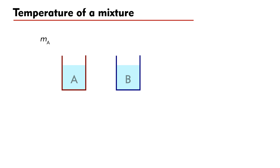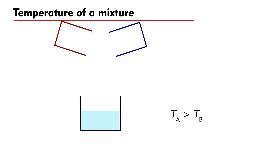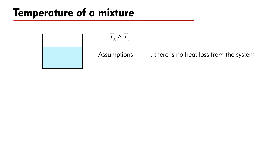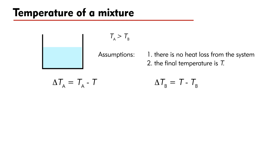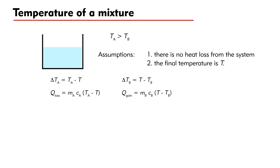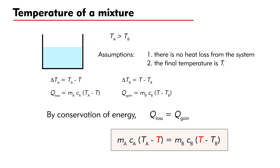Suppose we have two liquids A and B with masses MA and MB, specific heat capacities CA and CB, and initial temperatures TA and TB respectively. Assume that A is hotter than B, that is TA is greater than TB. Pour the two liquids into an empty polystyrene cup and assume there is no heat loss from the system. The final temperature is T. The magnitude of change in temperature of A is TA minus T, and that of B is T minus TB. The heat loss by A is Q_loss equal to MA times CA times (TA minus T). The heat gain by B is Q_gain equal to MB times CB times (T minus TB). By conservation of energy, Q_loss equals Q_gain, giving us an equation with T as the only unknown, enabling us to find the final temperature T of the mixture.